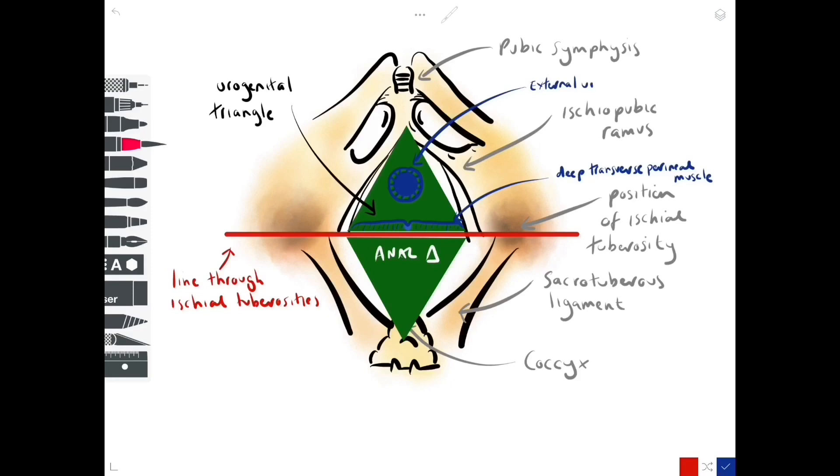We have a hole in the perineal membrane for the urethra, and surrounding it we have an external urethral sphincter. We have a couple of glands in the deep perineal space in the male. These are called the bulbourethral glands, and they secrete mucus into the urethra, and that mucus is produced during sexual arousal. The equivalent glands in the female reside in the superficial perineal space and are called the greater vestibular glands.